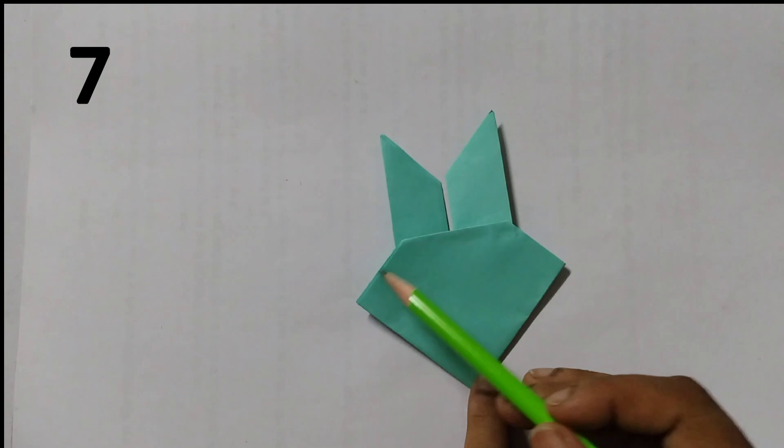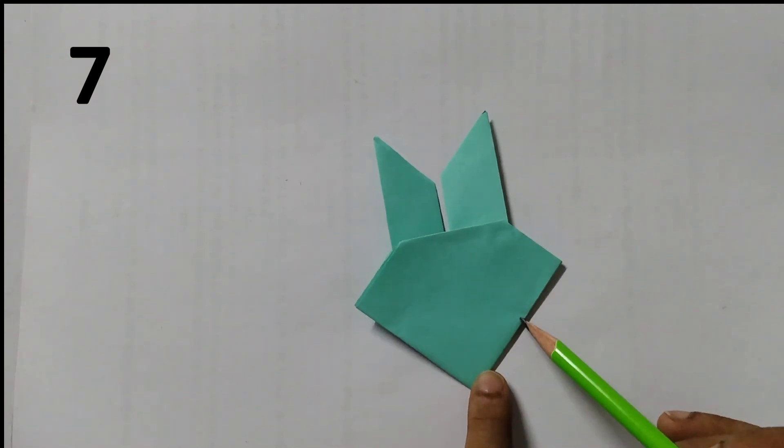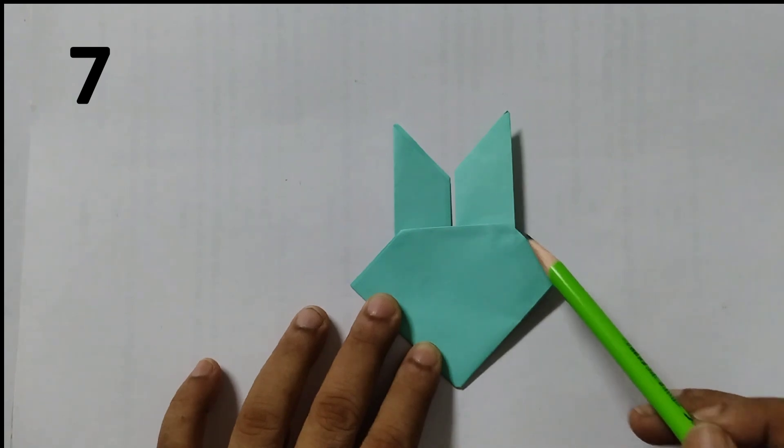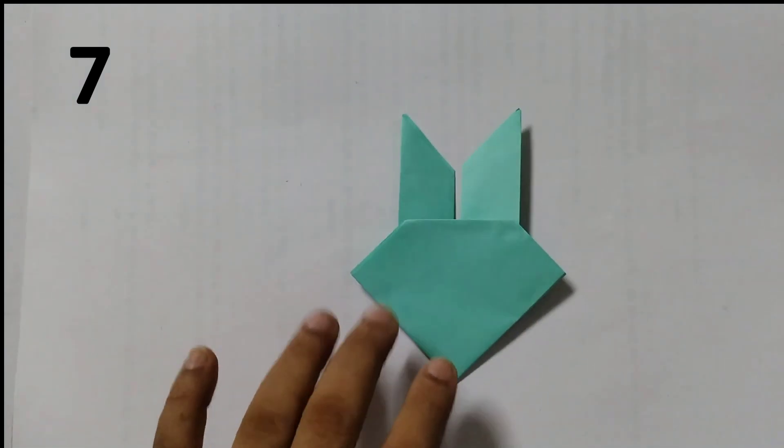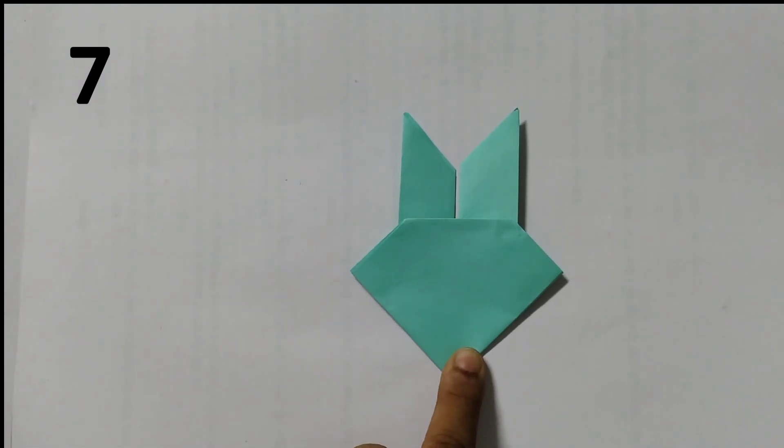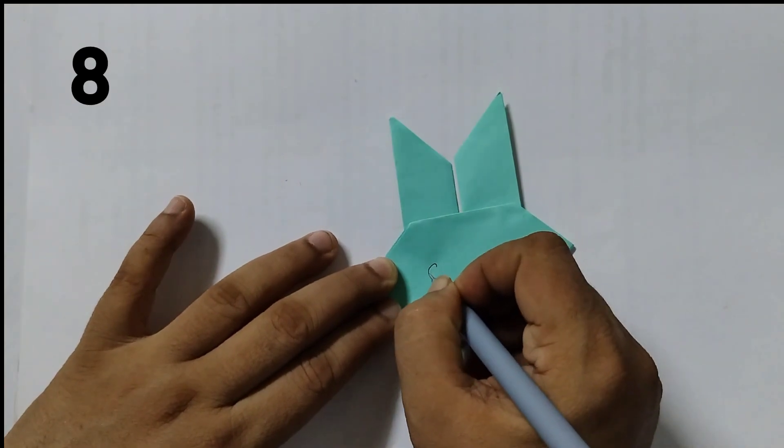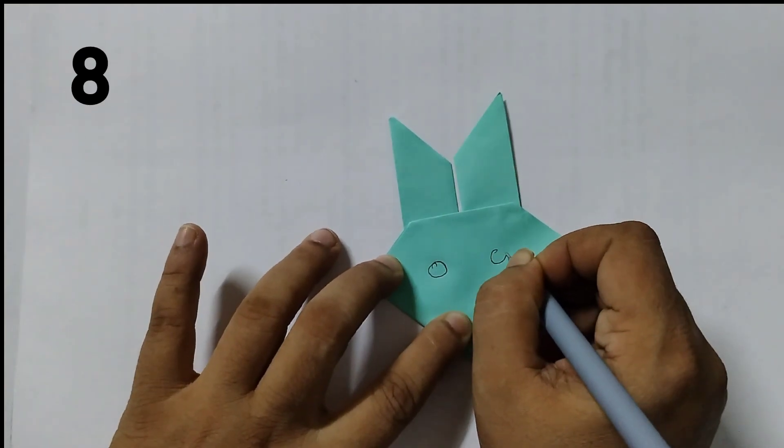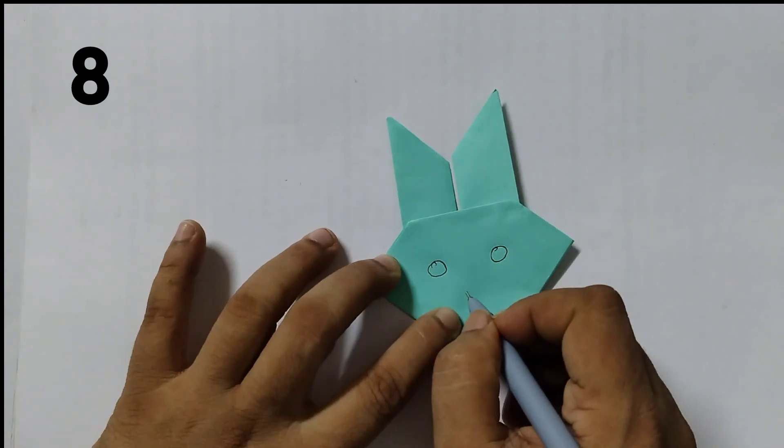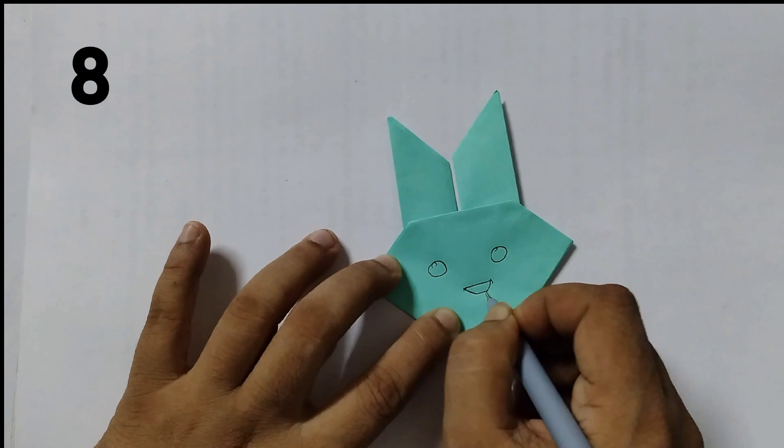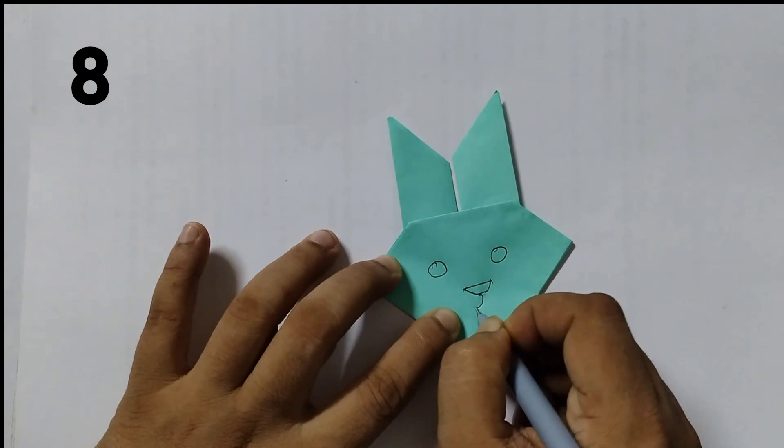1, 2, 3, 4, 5. So then press it hard. You just need to draw the eyes. So we will draw the eyes like this. And then you have the nose. And then the mouth given like this.